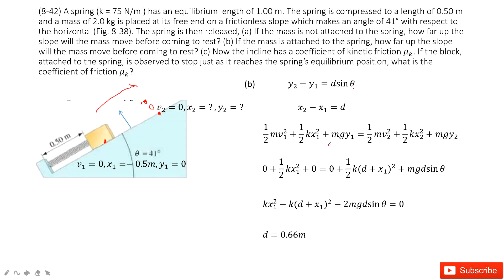With energy still conserved, we input the known quantities: v1 is 0, y1 is 0, v2 is 0. We substitute x2 as d plus x1, and y2 as d sine theta. The only unknown in the equation is d, and solving it gives d equals 0.66 meters.